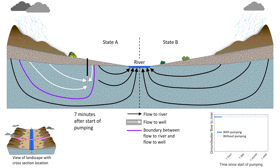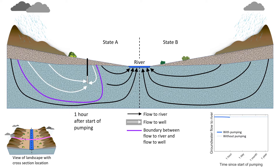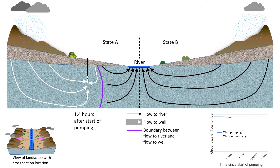In 7 minutes, the well intercepts some overflow from the left but groundwater from the far left flows deeply and goes to the river instead of the well. At 1.4 hours along this cross section, all groundwater to the left of the well flows towards the well. Most of the pumped water is still derived from groundwater storage but the well is beginning to capture groundwater that flowed to the river before pumping began, as shown by the slight downward shift of the solid blue line.